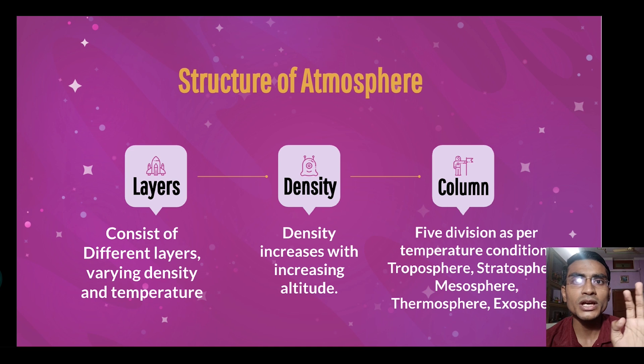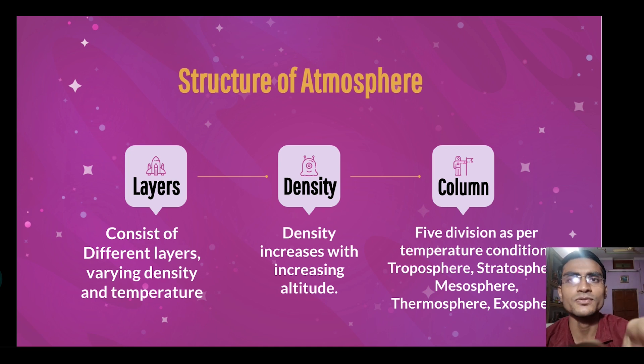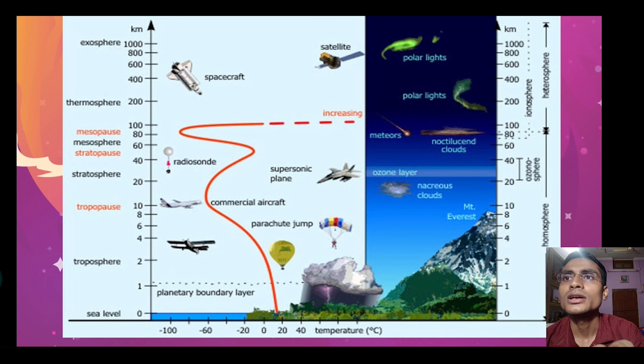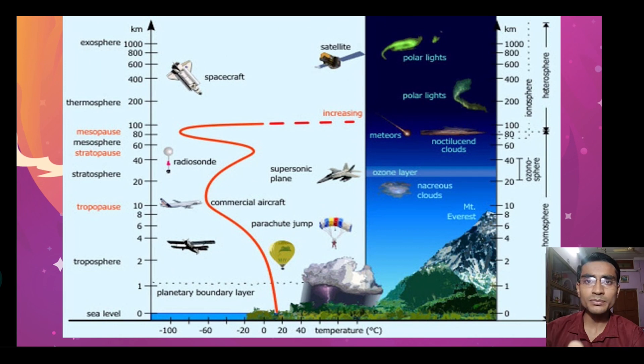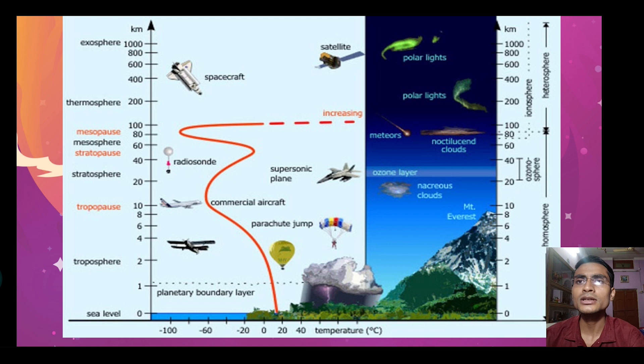The five divisions are: troposphere, stratosphere, mesosphere, thermosphere, and exosphere. Now this is a very important diagram of this entire chapter — if you understand this diagram, you have understood 90% of the chapter.